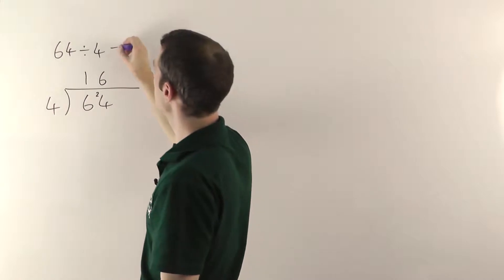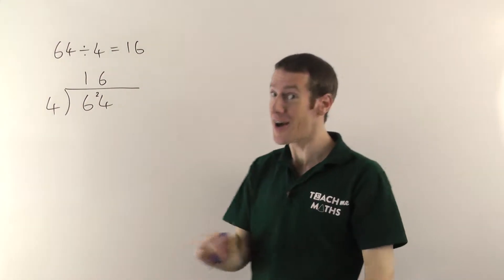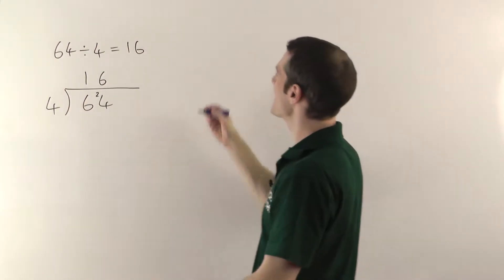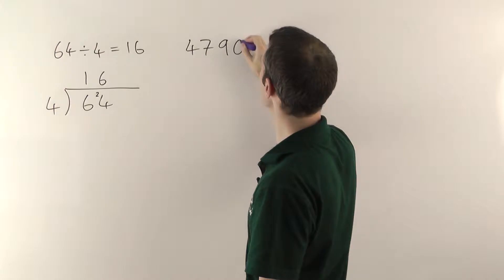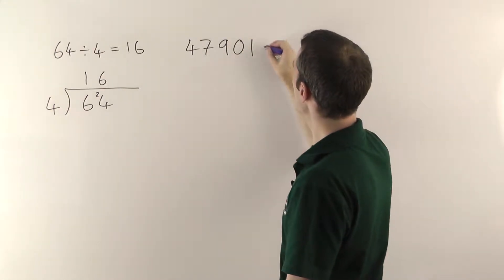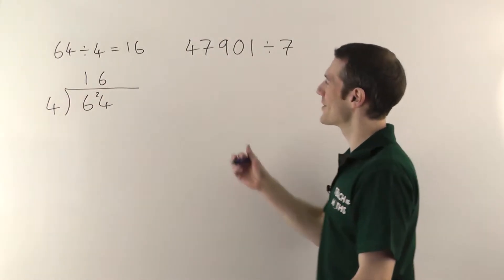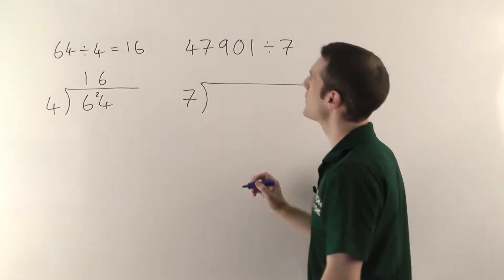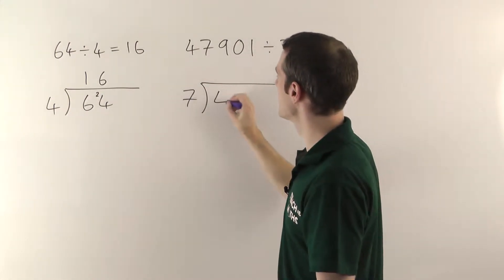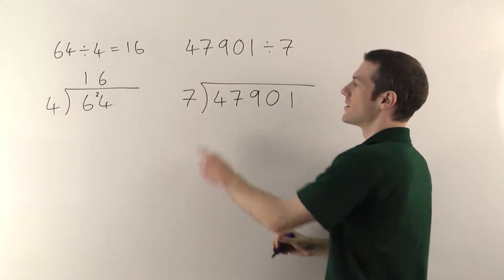Great, let's try a harder example. So I'll take a nice big number now: 47,901. And we'll divide that by 7. Let's practice our 7 times tables. So again, the number you're dividing by goes on the outside. Draw your bus stop. The big number sits underneath the bus stop like this.